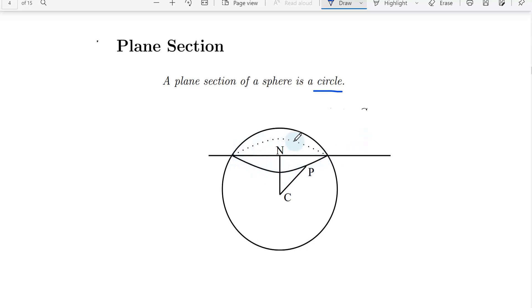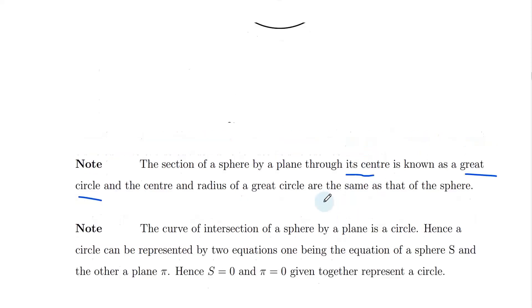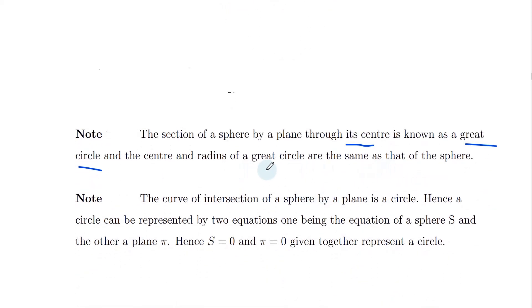If we cut the sphere by a plane, we will get a circle — that is the plane section of a sphere is a circle. The section of a sphere by a plane through its center is known as a great circle, and the center and radius of a great circle are the same as that of the sphere.